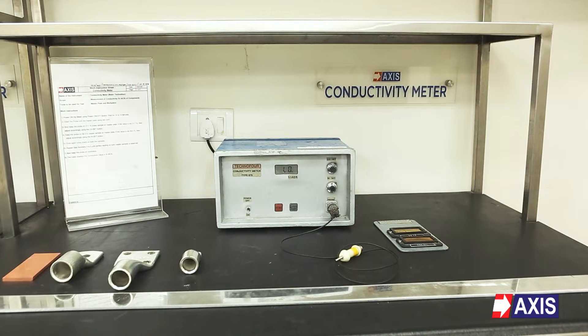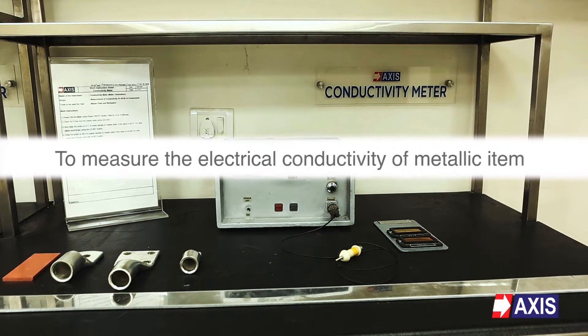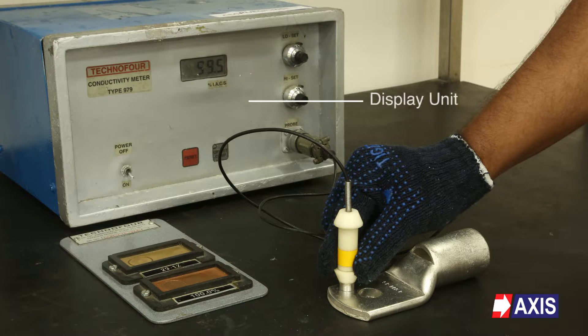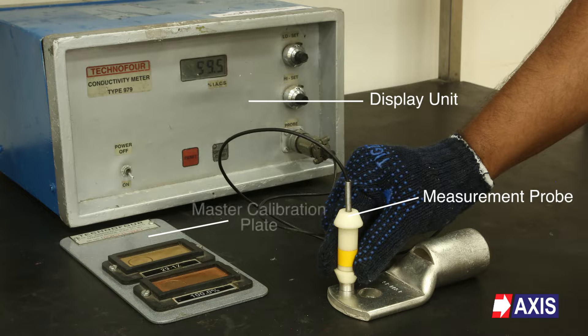Equipment used and their applications. To measure the electrical conductivity of a metallic item, we use three tools: Number one, display unit. Number two, measurement probe used to measure the conductivity of the metals. Number three, master calibration plate.